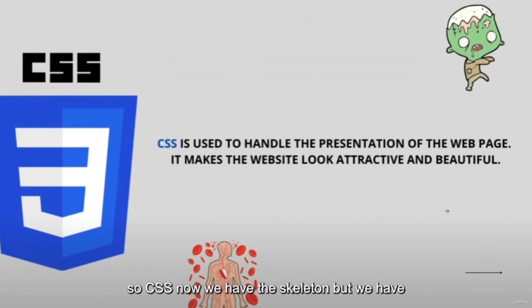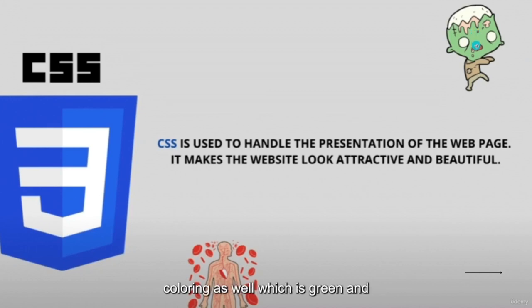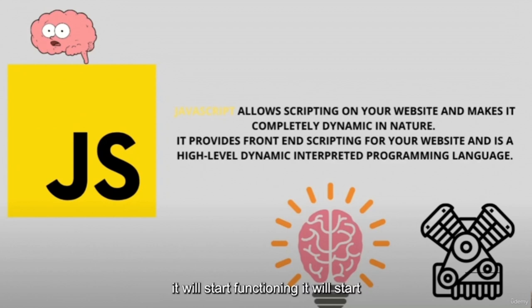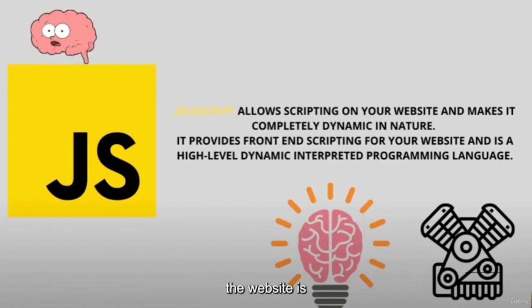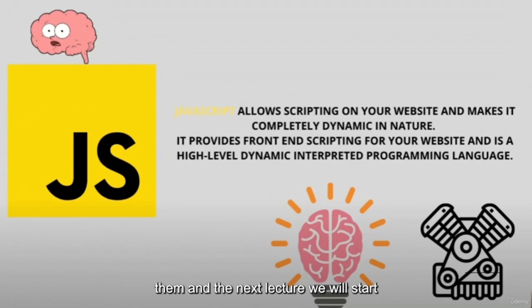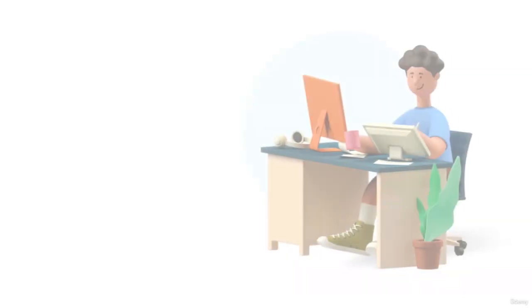Think of it like a zombie: we have the skeleton and the coloring, which looks good, but we also need the brain. Without the brain, it's only a zombie, but when we get the brain, it starts functioning, thinking, and walking. So the basic engine of the website is JavaScript — it is a programming language, whereas CSS and HTML are not programming languages. In the next lecture, we will start learning HTML.